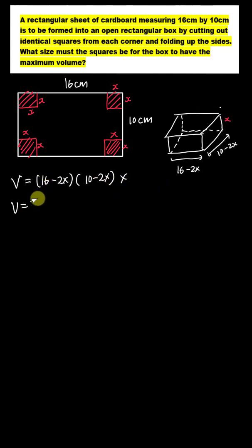So this one will give me 160, and then this one is minus 32x, and then this one is minus 20x, and then plus 4x squared, and then the whole thing needs to multiply by x again. So I will prefer to put my x cubed first, so it's 4x cubed after I solve this one.